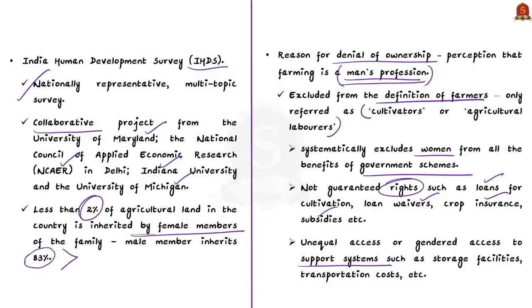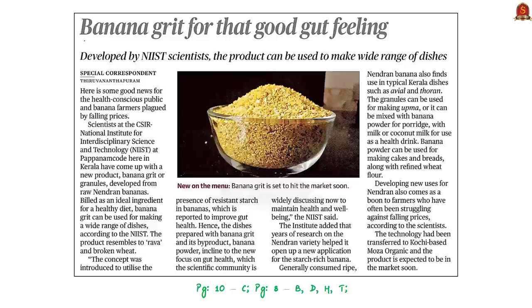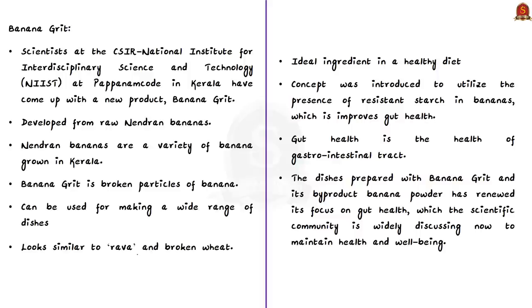With this, we have come to the end of this op-ed article. Now let us move on to the next news article. Scientists at the CSIR National Institute for Interdisciplinary Science and Technology (NIIST) at Pappanamkhod in Kerala have come up with a new product called banana grit, developed from raw Neendran bananas — a variety grown in Kerala. Banana grit refers to broken particles of banana and can be used for making a wide range of dishes. It looks similar to rava and broken wheat and is an ideal ingredient in a healthy diet. The concept was introduced to utilize the presence of resistant starch in bananas, which is reported to improve gut health — referring to the health of the gastrointestinal tract.